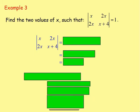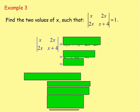Example 3: find two values of x such that the determinant of the matrix with entries x, 2x, 2x, and x plus 4 equals 1. The first thing you do is work out the determinant, which is found by calculating AD minus BC.